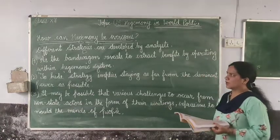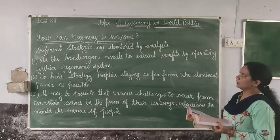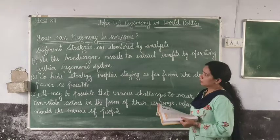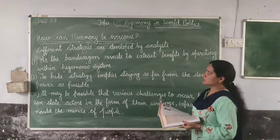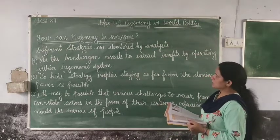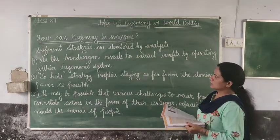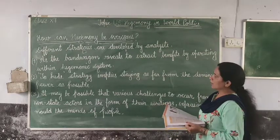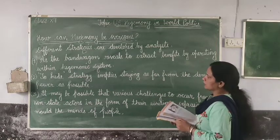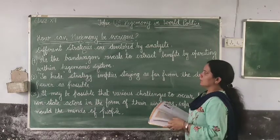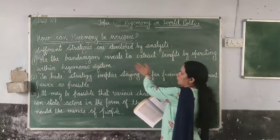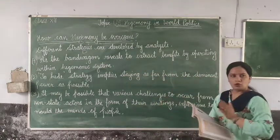Our last topic in this chapter is how can hegemony be overcome. Overcome means to finish or end. Different strategies are developed by analysts. First is the bandwagon strategy — it means to extract benefits by operating within the hegemony system. If a hegemony system exists, accepting and working within it can lead to benefits.